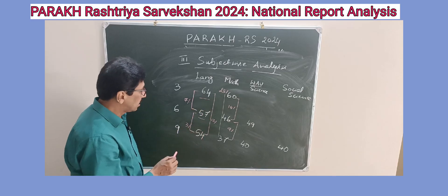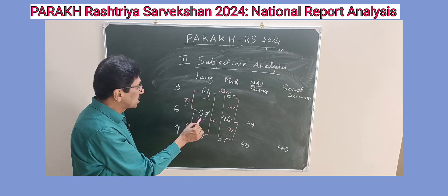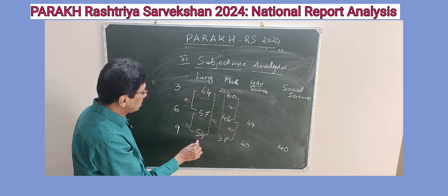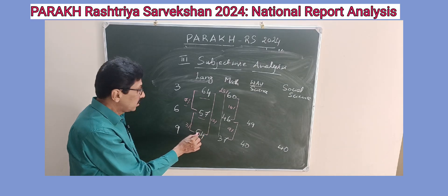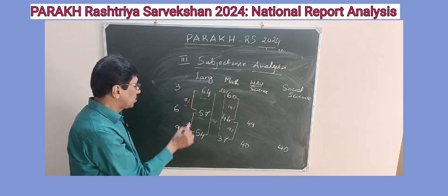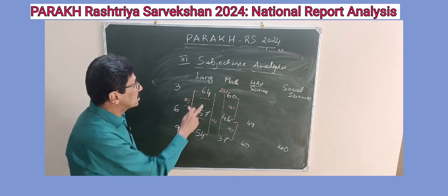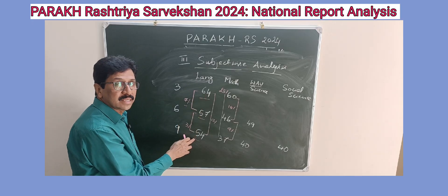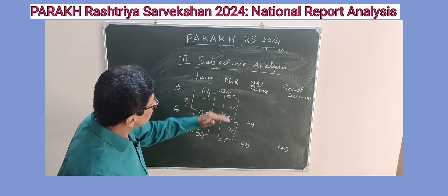In language, sixth standard performance is 57 percent — a seven percent drop from third standard. In ninth standard it is 54 percent, a further three percent drop. Totally, from third standard to ninth standard, there is a 10 percent drop in language performance — from 64 percent down to 54 percent.